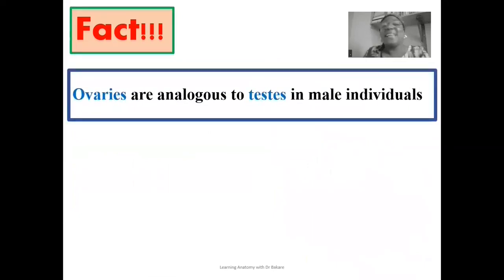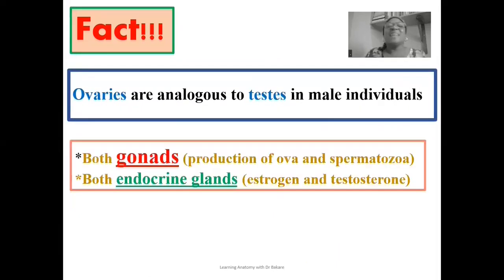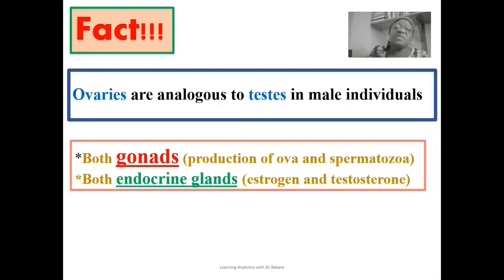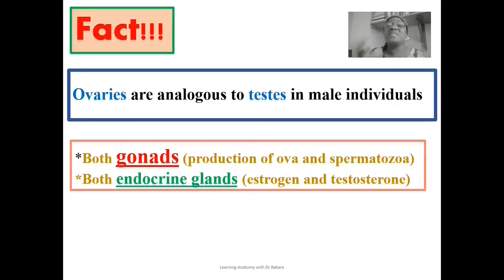The ovaries are analogs of the testes in males because both are gonads — responsible for the production of sex gametes. For females, the ovary produces ova; for males, the testes produce spermatozoa. Both glands also produce hormones: the ovary produces estrogen, while the testes produce testosterone. You can see the similarities between the ovaries and testes in terms of what they produce.